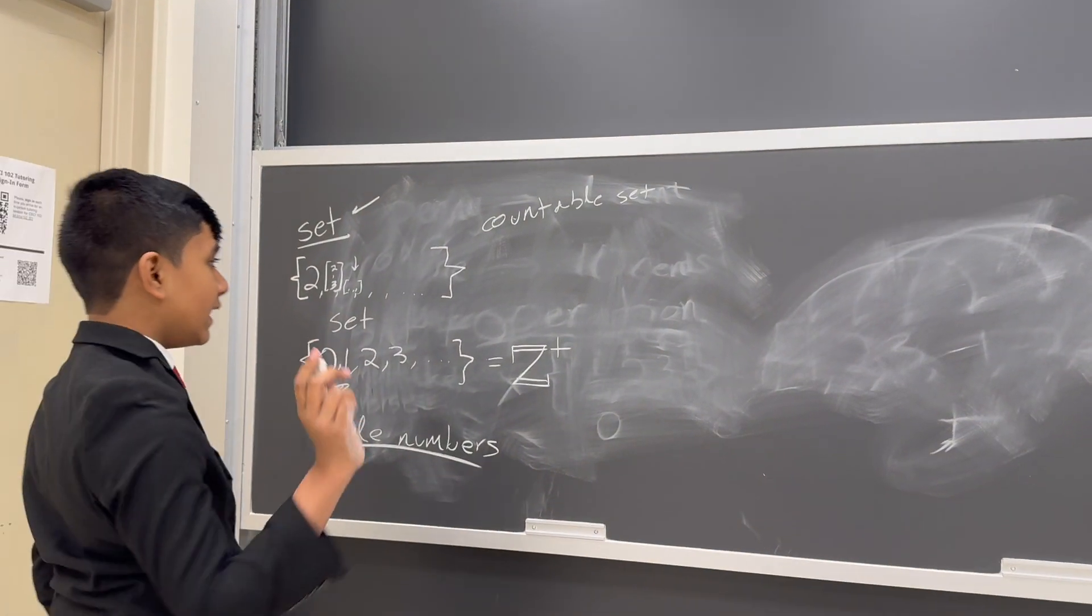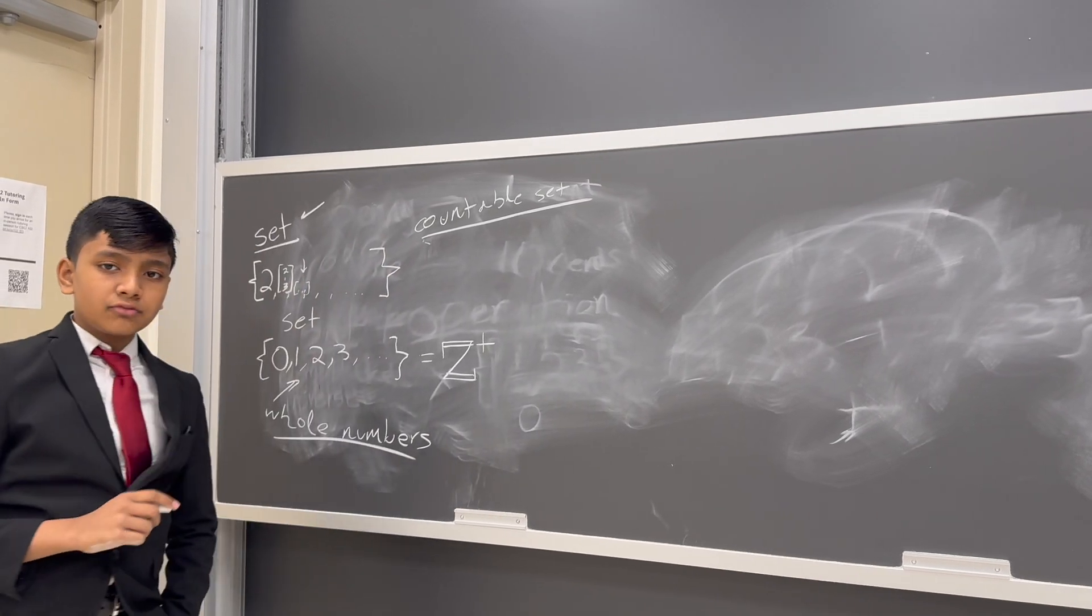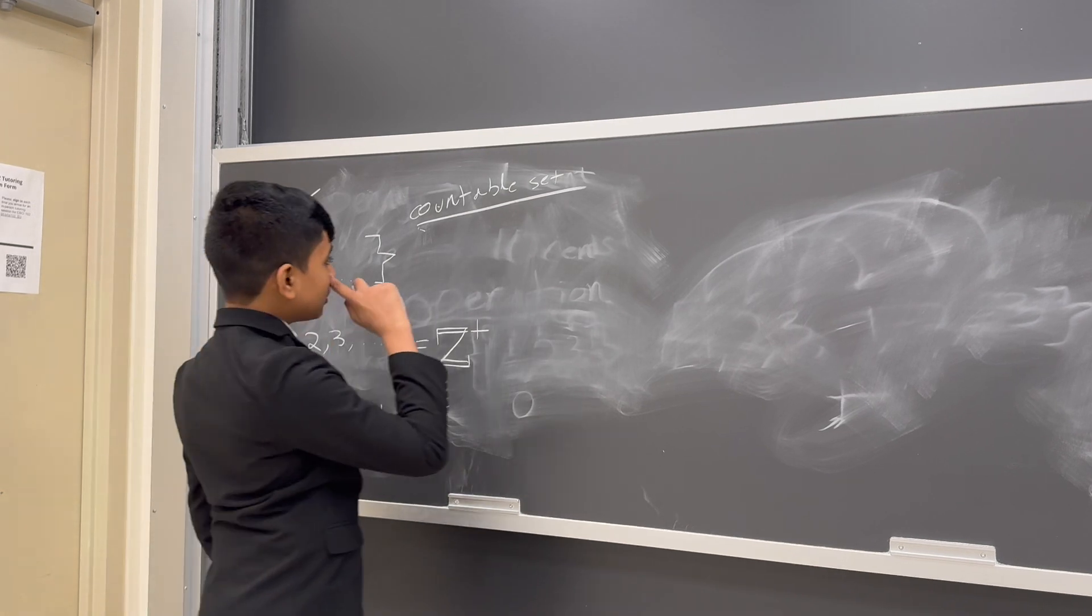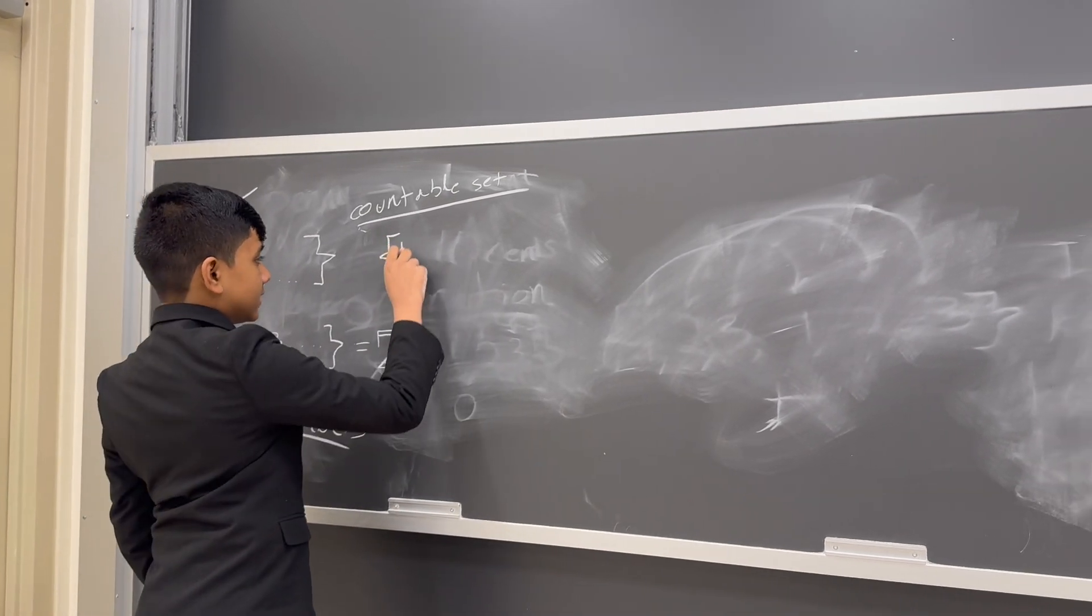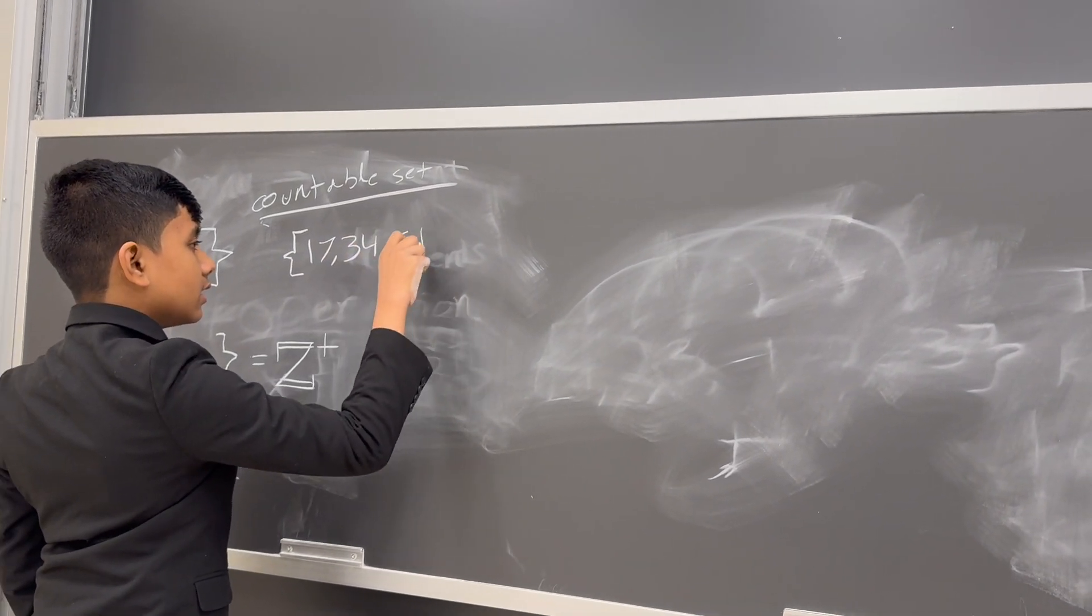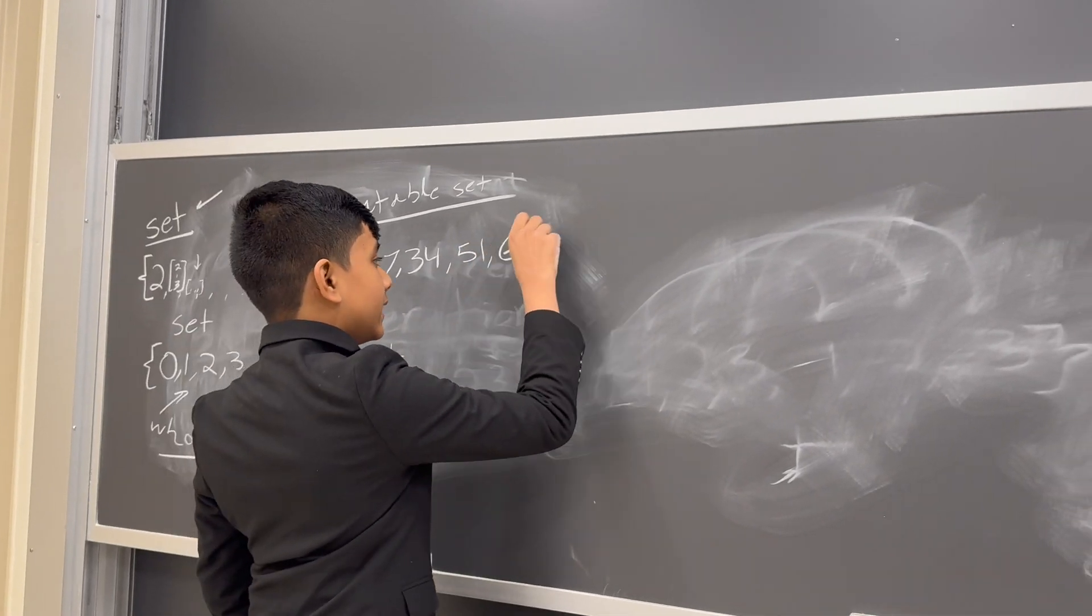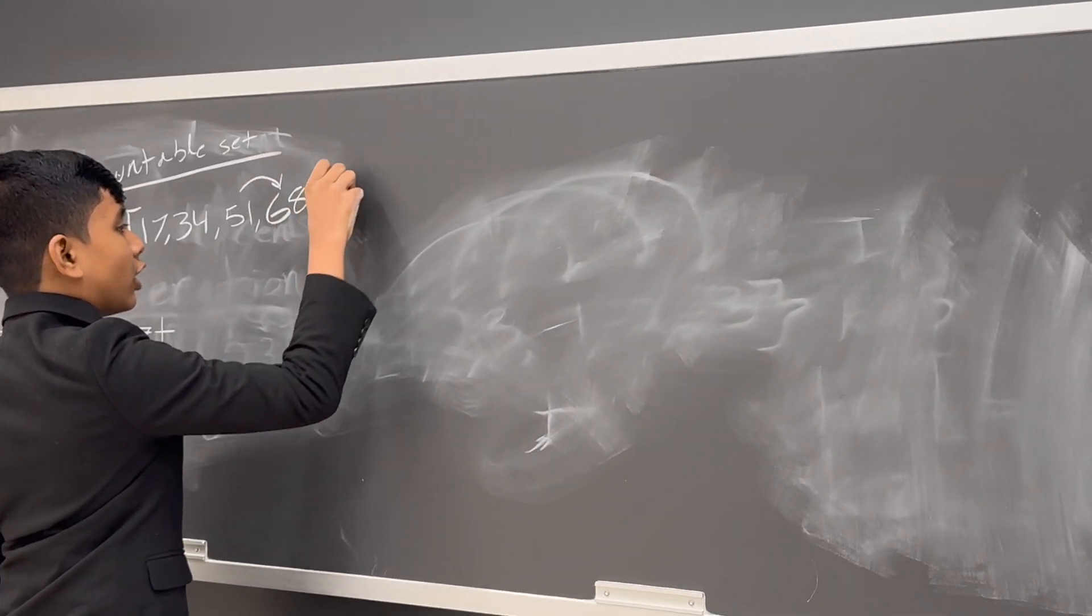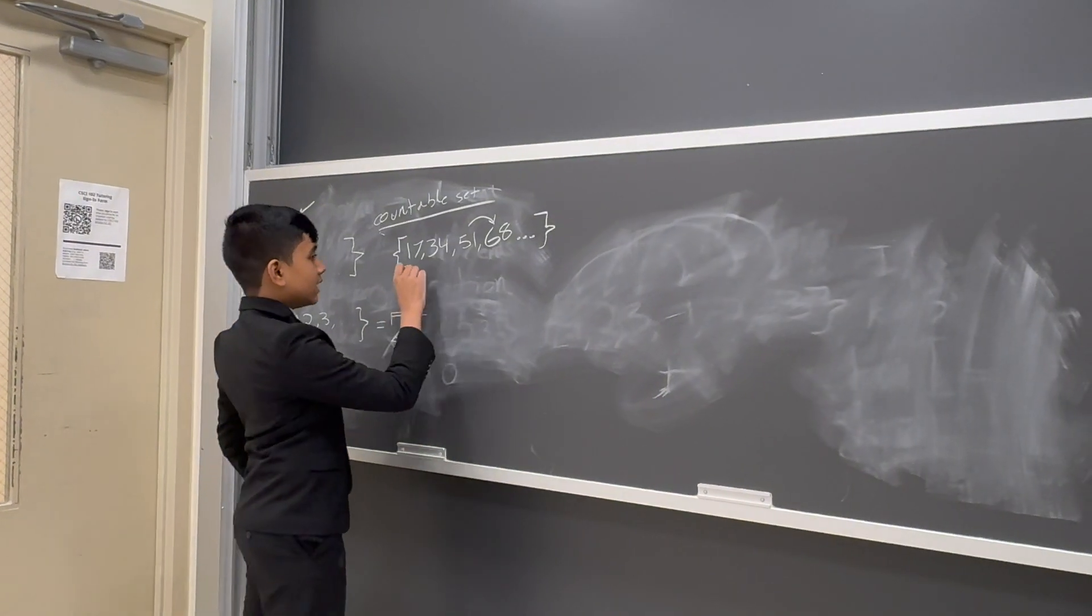So, a countable set is what we call a set where we know what the next element is. So, for example, if we're talking about the multiples of 17, and I say 17, 34, 51, you can tell me what the next element is, right? It's obviously 68, you just have to add 17 to this one, or maybe you've memorized it by heart like me. So, this is a countable set.